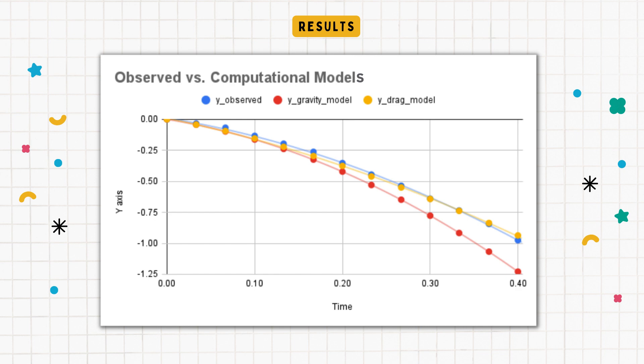We can also observe that our observational model and our second computational model which considered drag are very similar. This is probably due to the fact that very similar forces are interacting with each respective object. But it is also to note that our drag coefficient used in our second computational model had to be adjusted for the purpose of this experiment. So there might be some slight variance in the accuracy of our results.